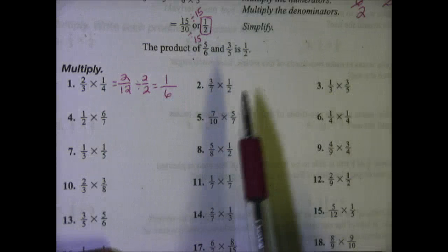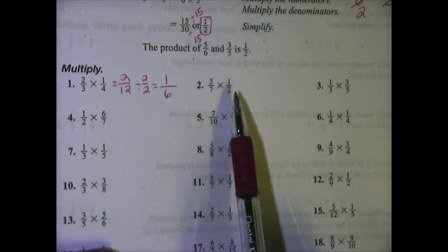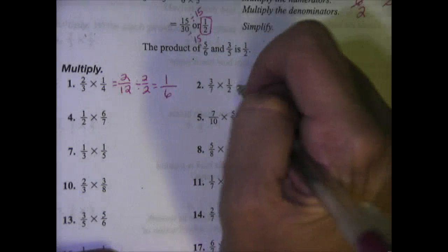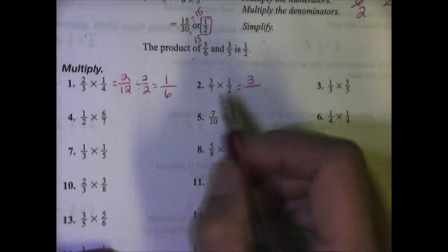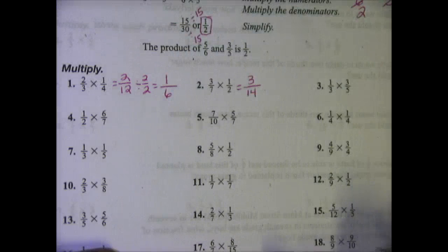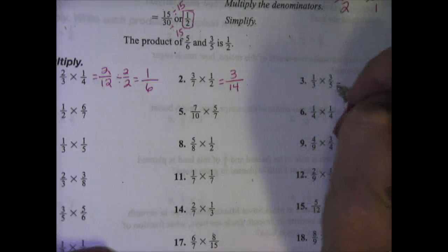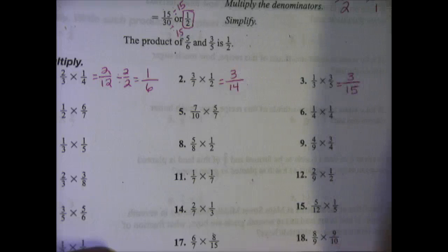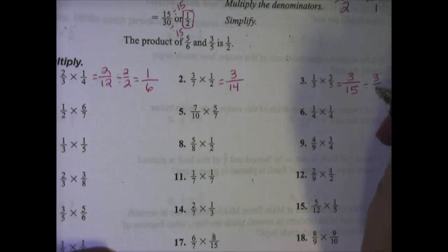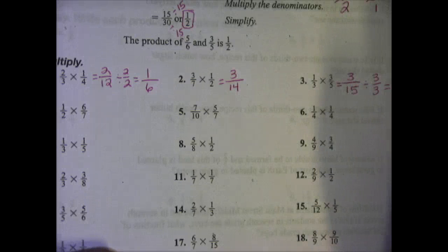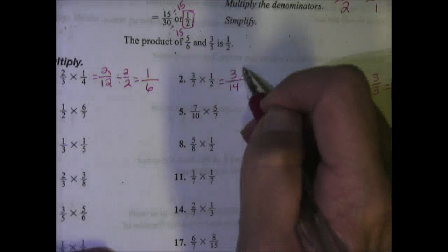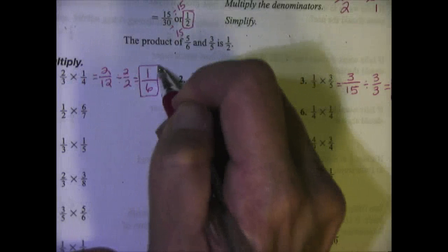Number 2 says 3/7 times 1/2. 3 times 1 is 3, and 7 times 2 is 14. Number 3, 1/3 times 3/5. 1 times 3 is 3, 3 times 5 is 15. We can simplify these because 15 is divisible by 3. Divide both by 3 and we get 1/5. I'm going to put a box around my answer so it's clear which one is the final answer.